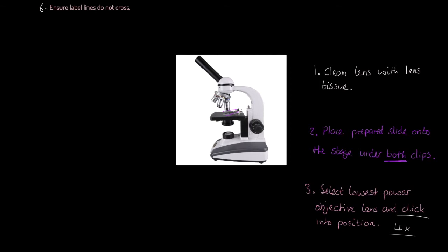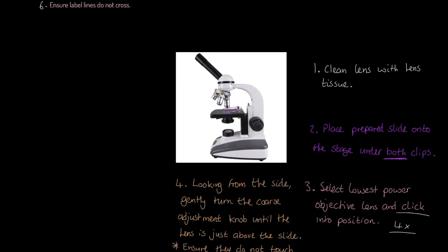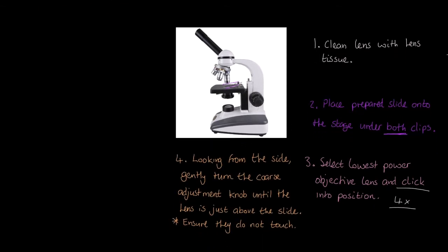Next, and this is perhaps where very frequently things will go wrong, but this is where we want you to be really hyper accurate. Looking from the side now, so we're not looking through the eyepiece, gently turn the course adjustment knob until the lens is just above the slide. We're bringing the stage up until there's very little distance between the lens itself and the specimen. But importantly, we do not allow them to touch, which is exactly why you're looking from the side.